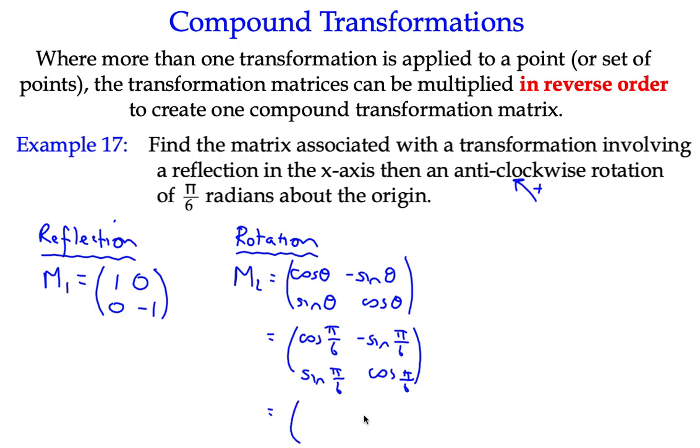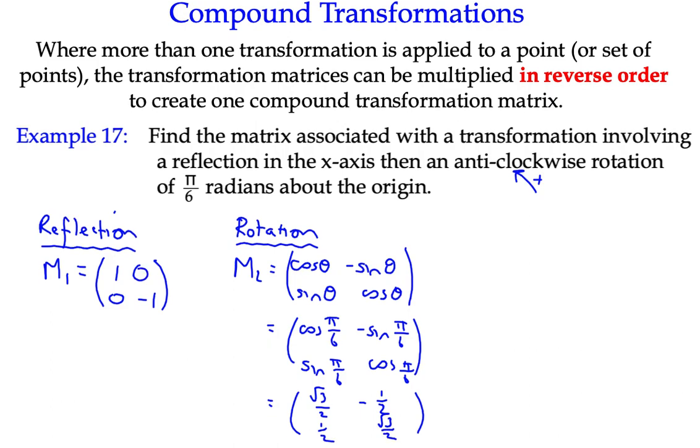And that gives me cos π over 6, cos 30 degrees, is √3 over 2. Negative sine, sine of π over 6 is a half, so that becomes negative a half. The sine of π over 6 is positive a half. And then we've got cos π over 6 is √3 over 2 again. OK, so that's our second matrix. I might take a common factor of a half out of that just to make it easier, but I'm not going to just now.